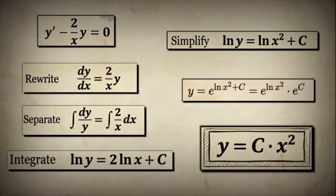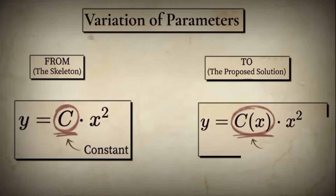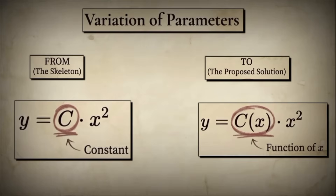Now comes the revolutionary idea. The solution y equals cx² perfectly solves the simplified problem. But remember, we ignored the right side of the original equation to create this simplified version. To account for what we ignored, we need to make one radical change: what if the constant c is not a constant at all, but a function of x? Instead of y equals c times x², we try y equals c(x) times x². We replace the constant c with a function c(x) that depends on x. This technique is known as variation of parameters. We keep the overall form of the solution but allow the constant to vary — this flexibility will enable us to satisfy the original equation, including all the parts we temporarily ignored.